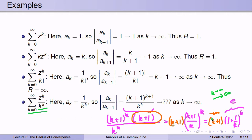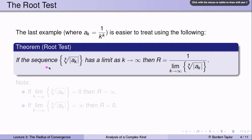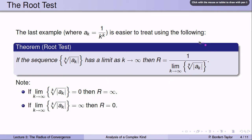Suppose you hadn't known how to find that limit — what would you have done? This last example, where a_k was 1 over k^k, is actually easier to treat using the root test. Instead of looking at a_k divided by a_{k+1}, you simply look at the k-th root of |a_k|. If that sequence has a limit as k goes to infinity, then the radius of convergence is 1 over that limit. If the limit equals 0, the radius of convergence is infinity; if the k-th root goes to infinity, the radius of convergence is 0.